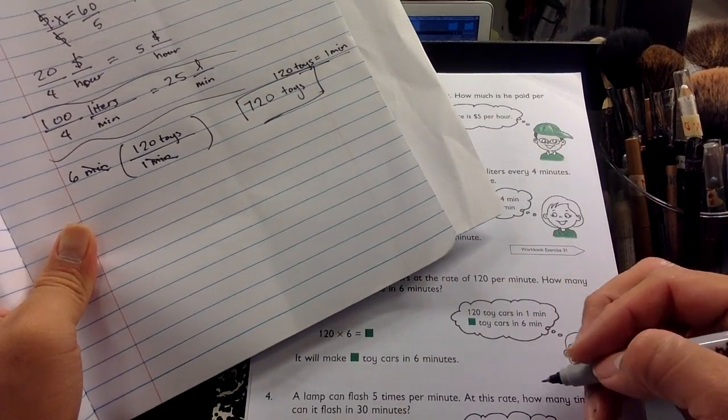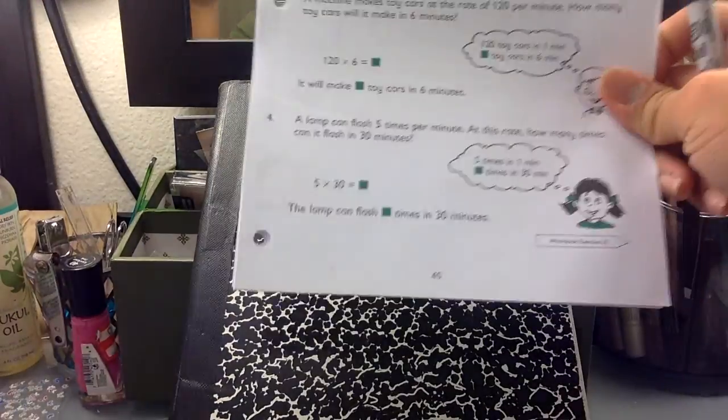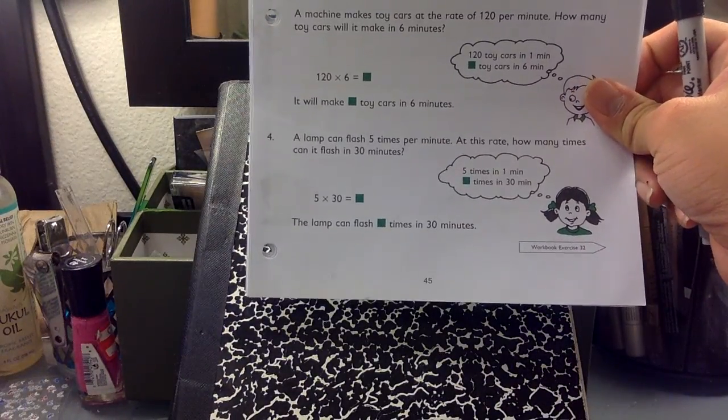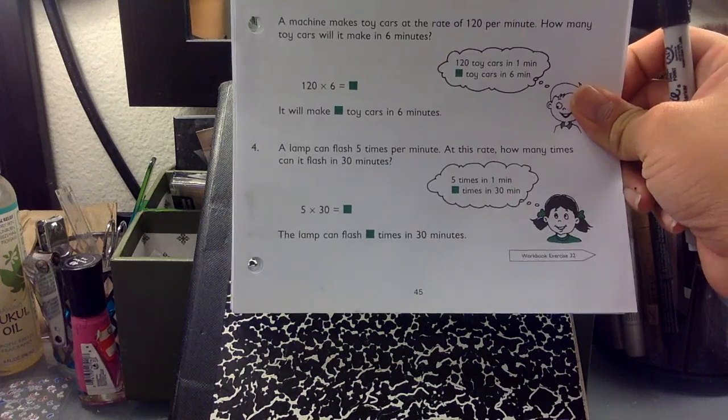A lamp can flash five times per minute at this rate. Okay. Wait, I don't know if you can see that. A lamp can flash five times per minute. At this rate, how many times would it flash in 30 minutes? Okay.